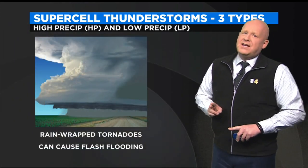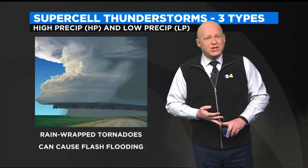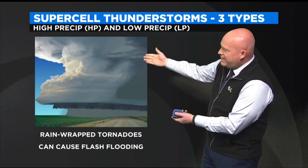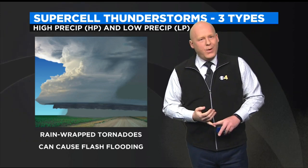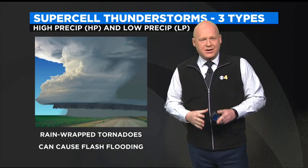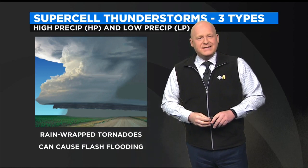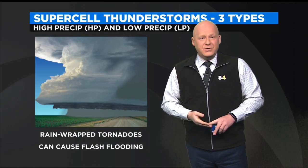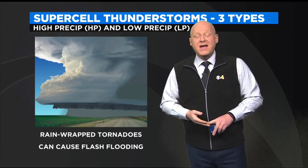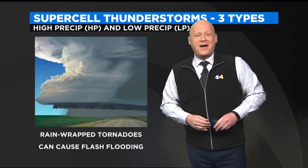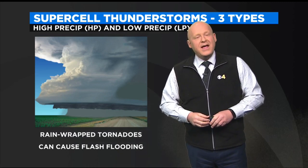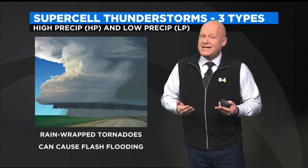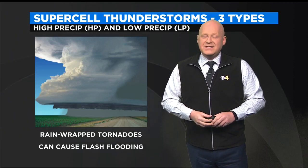The second and third types of supercell are the HP and the LP. HP supercells — you can see they're very gray and dark. They're very wet. They have such an incredible amount of moisture inside that often if there is a tornado, it is completely wrapped in rain. You do not see it, you do not know it's happening. Can you imagine — you seek shelter underground because of a tornado threat, but the heavy rain creates a flash flood threat. It is possible to simultaneously have both happening at the same time.